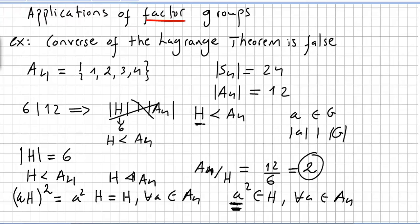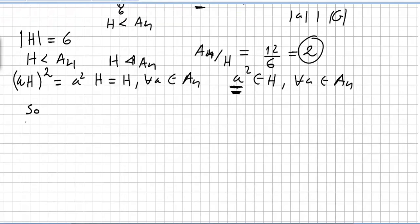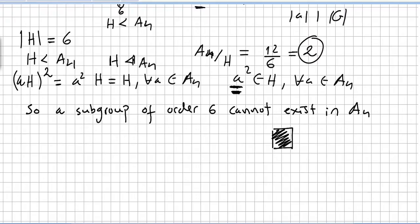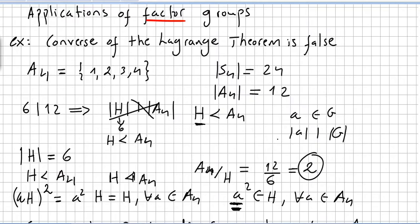But this is a contradiction, because H has order 6. So H cannot have 9 elements. So this is clearly impossible. So a subgroup of order 6 cannot exist in the alternating group A4. So we reach a contradiction, and this proves that the converse of the Lagrange theorem is false.